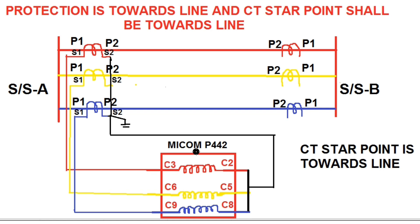Let us take a simple example of a distance protection relay connected at substation A end. For this discussion we use the Micom P442 relay. In the normal convention, P1 on the HV side of the CT shall be connected towards the bus side and P2 towards the line side. The CT star point shall be formed towards the protective object — here the transmission line — so S2 terminals are shorted together and earthed. In the relay, terminals C3, C6, and C9 represent the positive polarity for red, yellow, and blue phases respectively. S1 of each phase is connected to C3, C6, and C9, while C2, C5, and C8 are shorted together to form the neutral and taken back to the CT junction box.